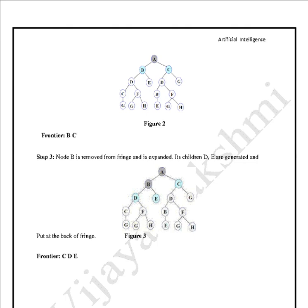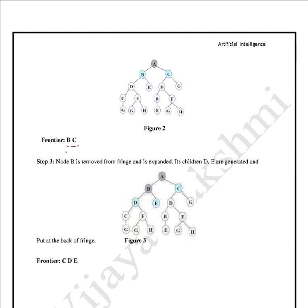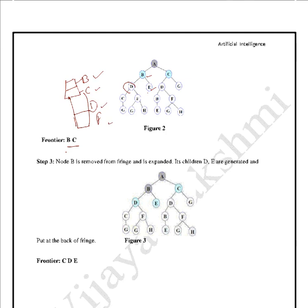With B and C in the frontier, B is at the front of the queue. We expand B — its children are D and F, which are added to the queue after C. So the frontier now contains C, D, F. Node B is removed and C, D, F remain.